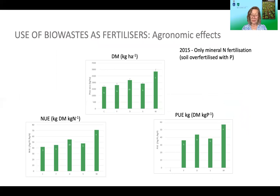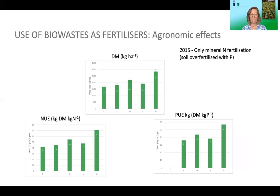In the next growing season, ryegrass was sown again and fertilized only with mineral nitrogen. The objective was to assess the phytoavailability of soil phosphorus after halting phosphorus fertilization. The plot that received cattle manure in the two previous crop cycles showed the best dry matter production and the best nitrogen and phosphorus use efficiency. The other plots previously fertilized with the pig and duck dry slurry fractions were similar to the plot receiving only mineral nitrogen fertilization.